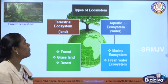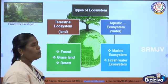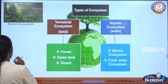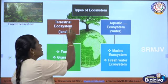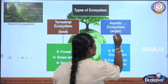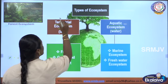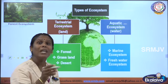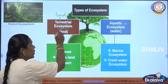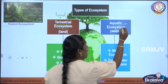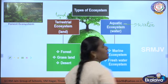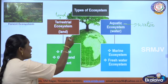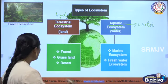There are two main types of ecosystem: terrestrial ecosystem and aquatic ecosystem. Terrestrial means land — animals living on land are part of the terrestrial ecosystem. Aquatic means water — animals living inside the water are part of the aquatic ecosystem.